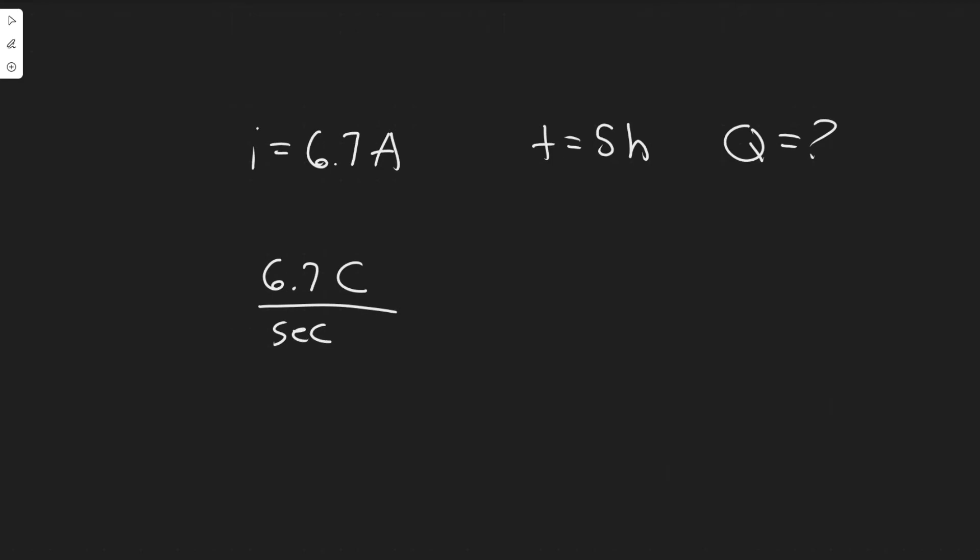Essentially, we're trying to get rid of this here, so basically we're going to multiply by the time. You can kind of think like velocity times time equals distance, or charge is equal to the current times the time. So you just want to multiply them.